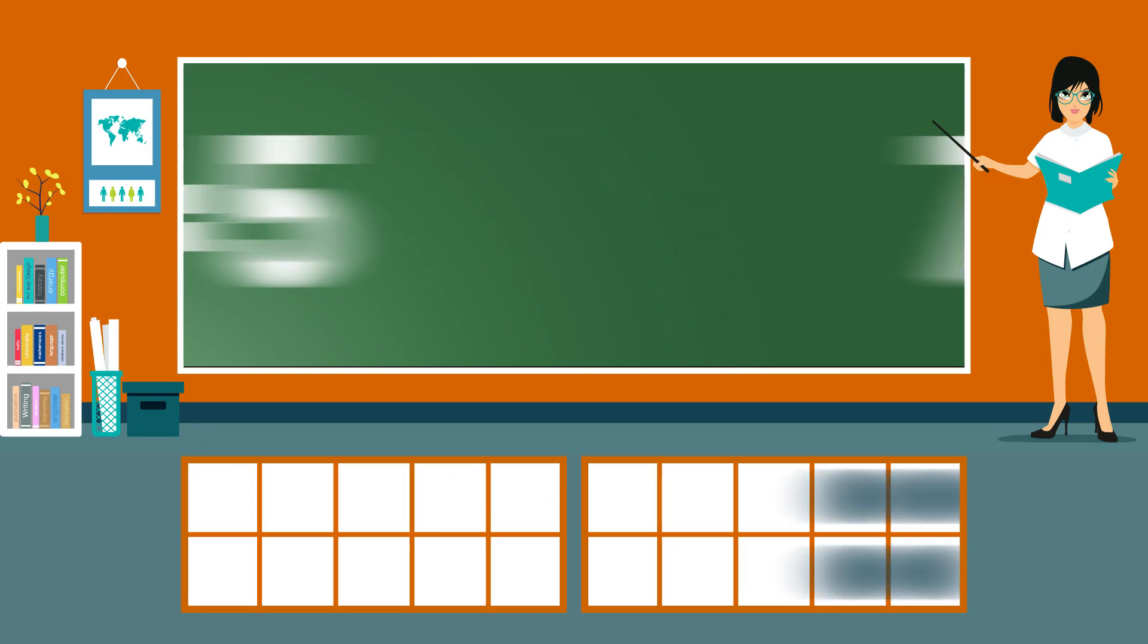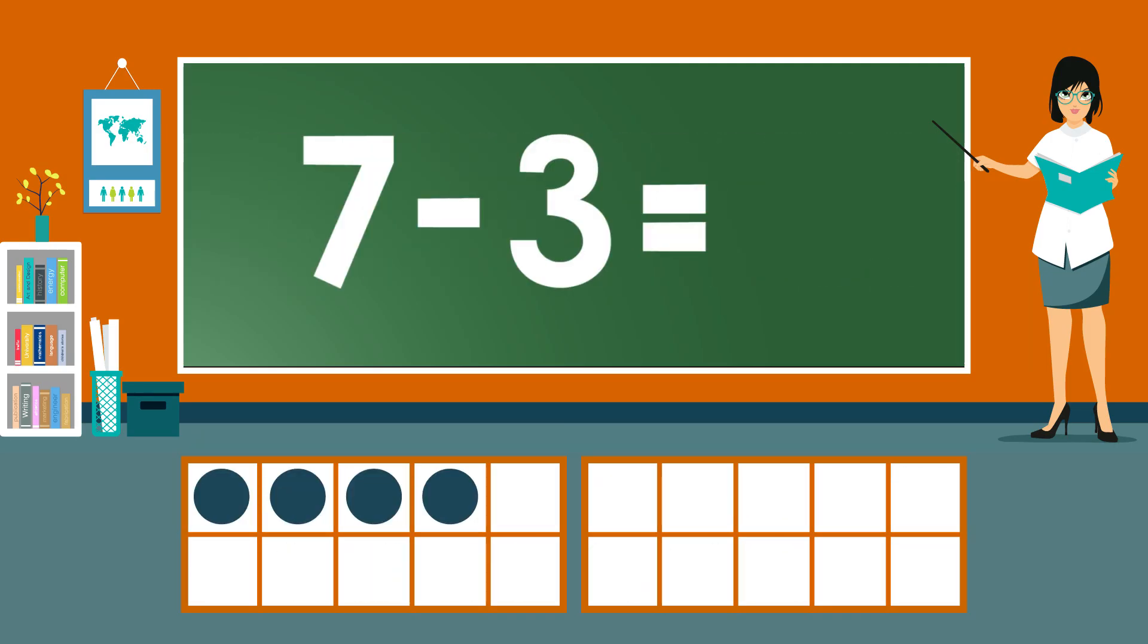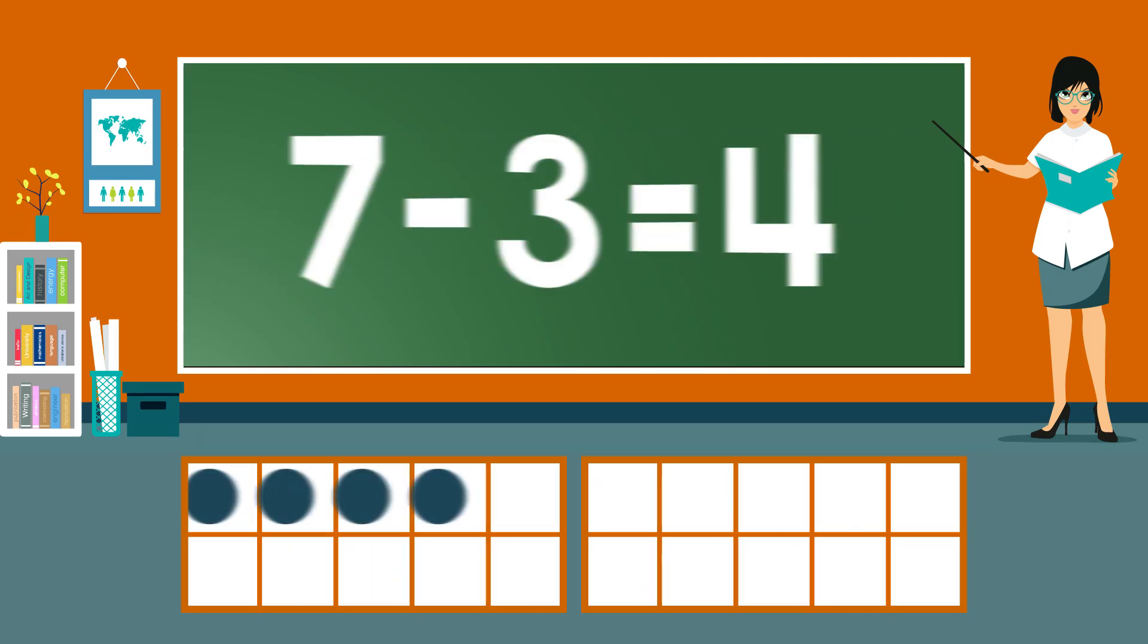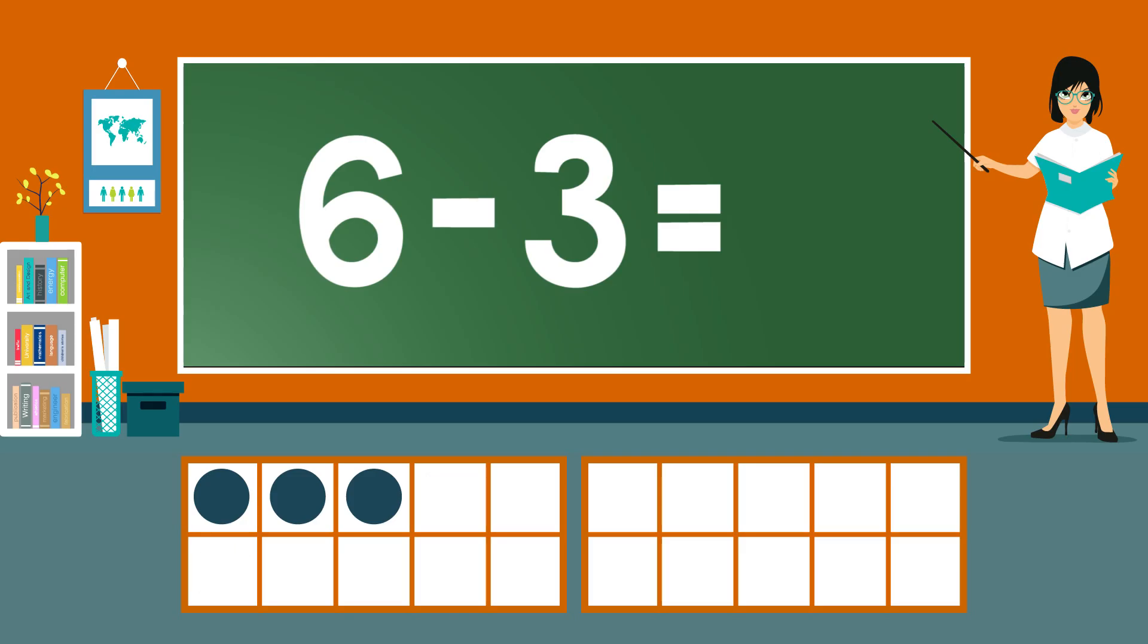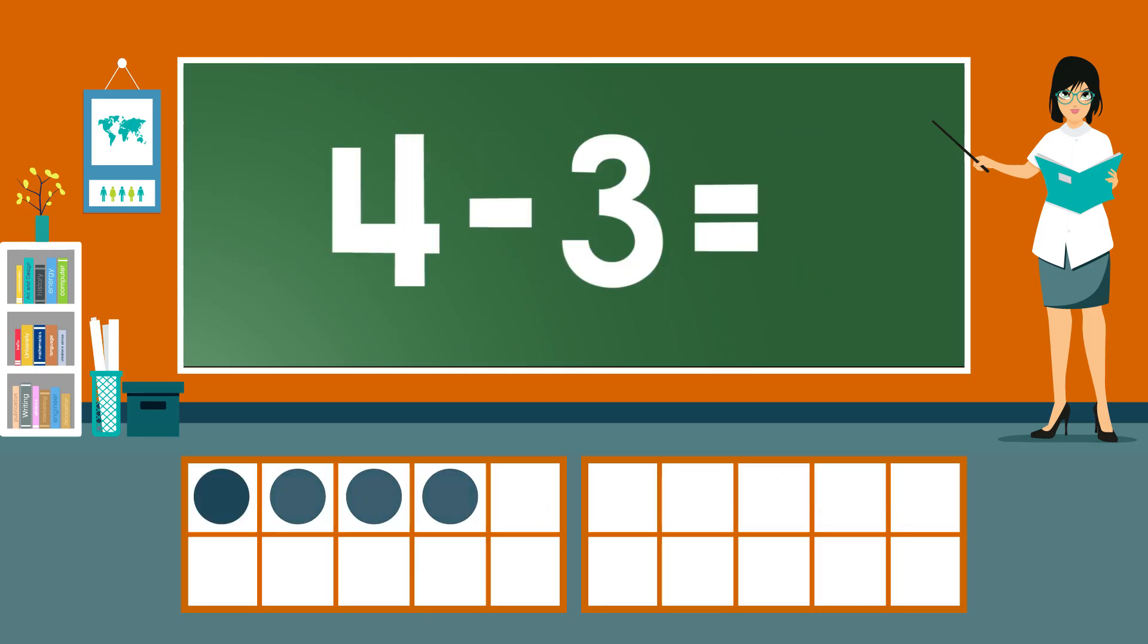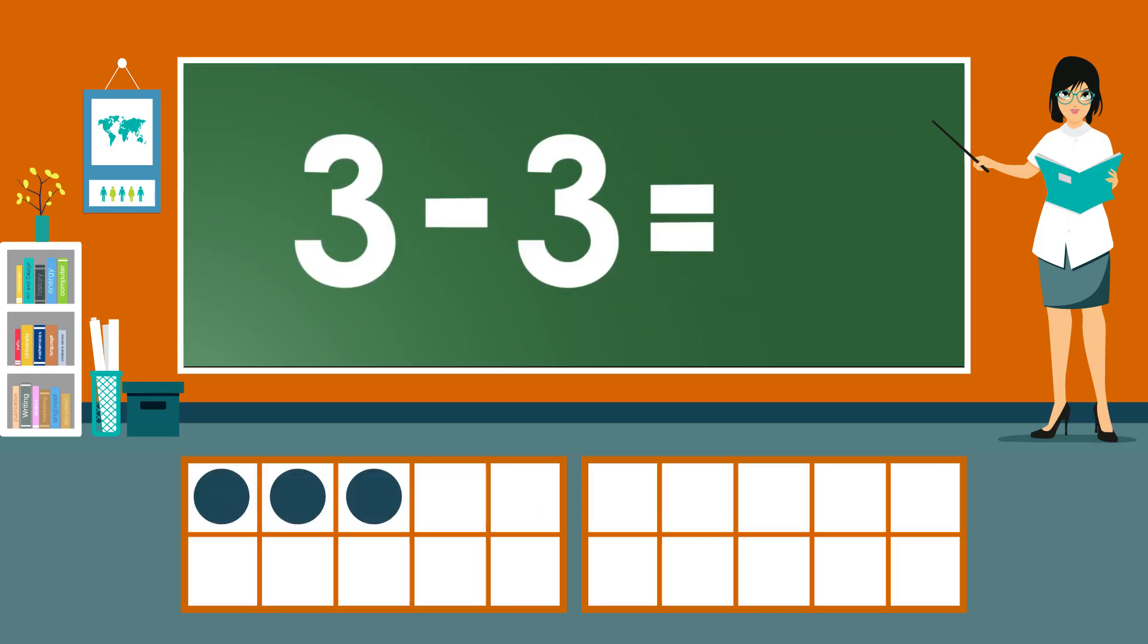5. 7 minus 3 equals 4. 6 minus 3 equals 3. 5 minus 3 equals 2. 4 minus 3 equals 1. 3 minus 3 equals 0.